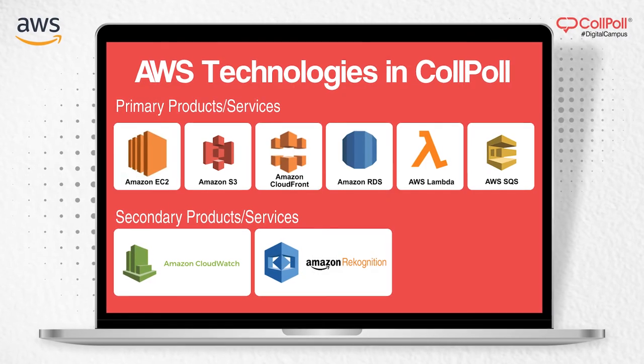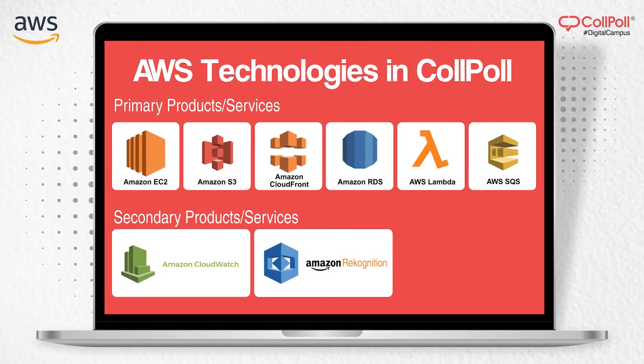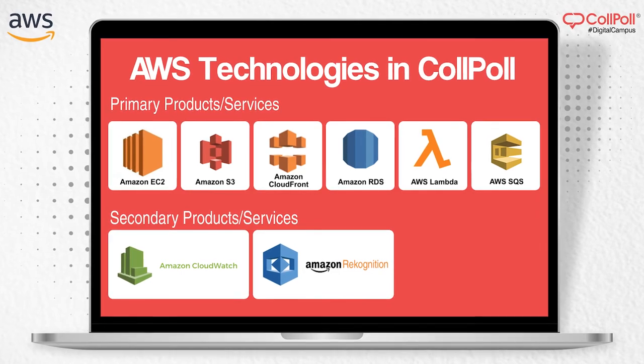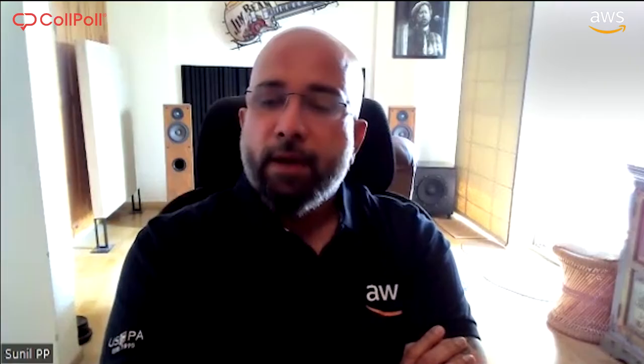We are very delighted with the results of the digital transformation activities we have been able to do at D.Y. Patil Pratishtan. All of this was obviously possible because of Colpool's cloud-native architecture, which is supported by Amazon Web Services.